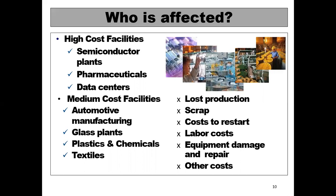The second category is medium-cost facilities, including automotive manufacturing, glass plants, plastics and chemicals, and textiles. These face costs such as lost production, craft loss, cost of restart, labor cost, equipment damage and repair, and other costs due to poor power quality — which can be a very serious issue.